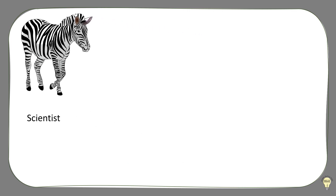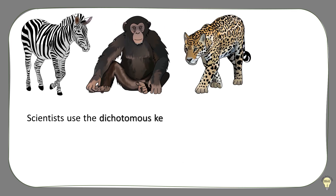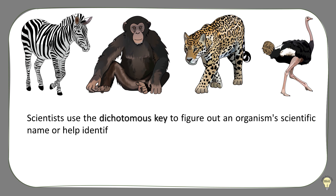Scientists use the dichotomous key to figure out an organism's scientific name or help identify its footprint.